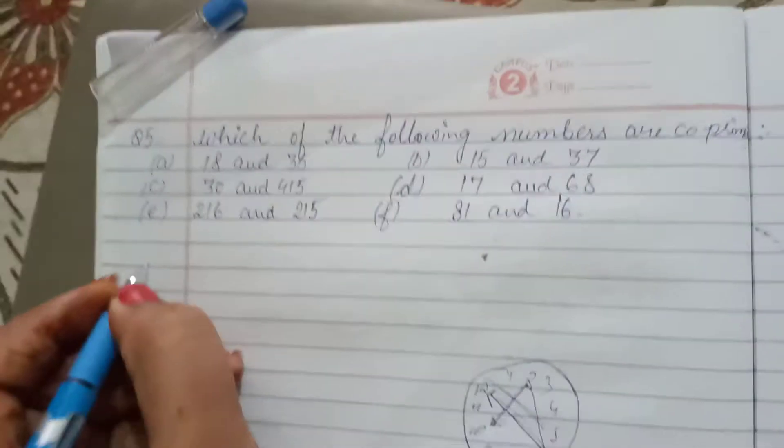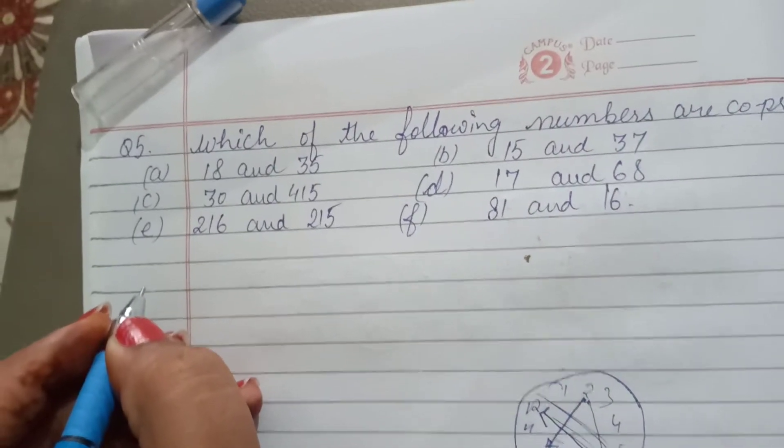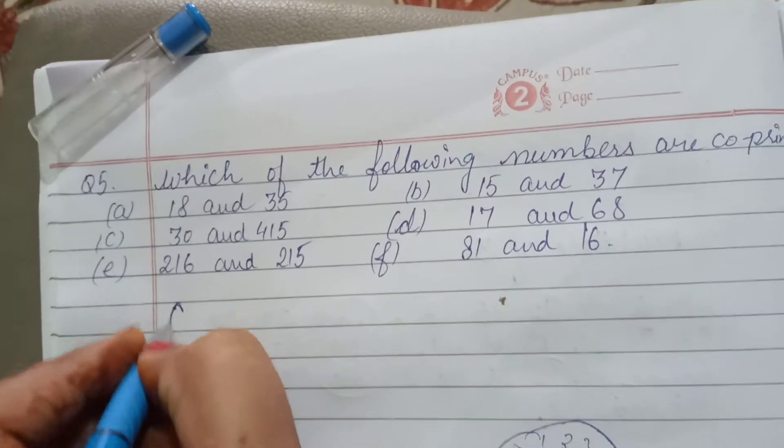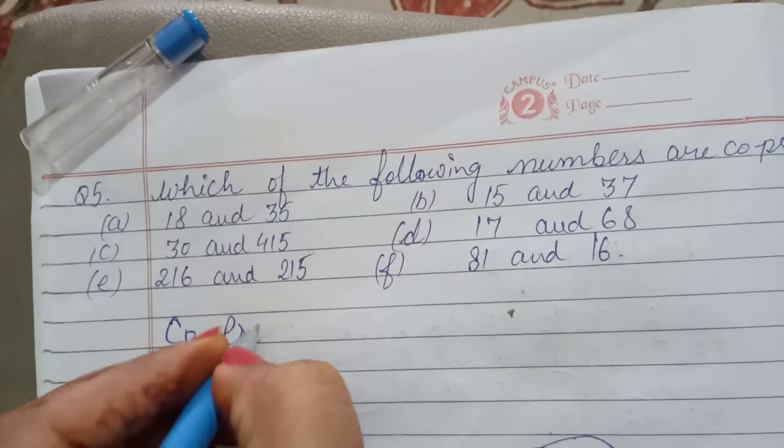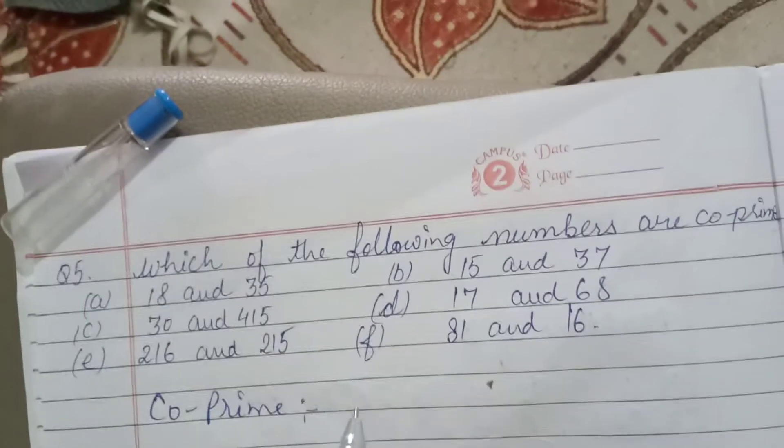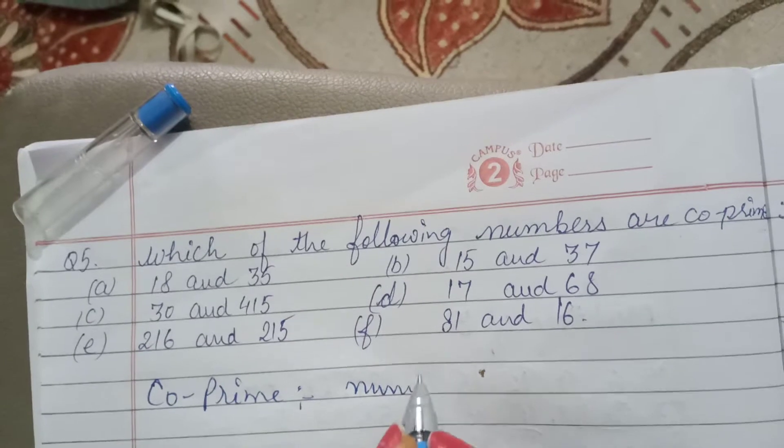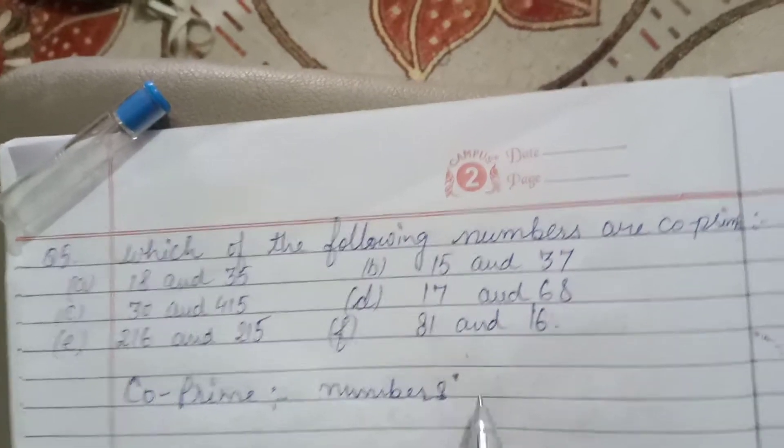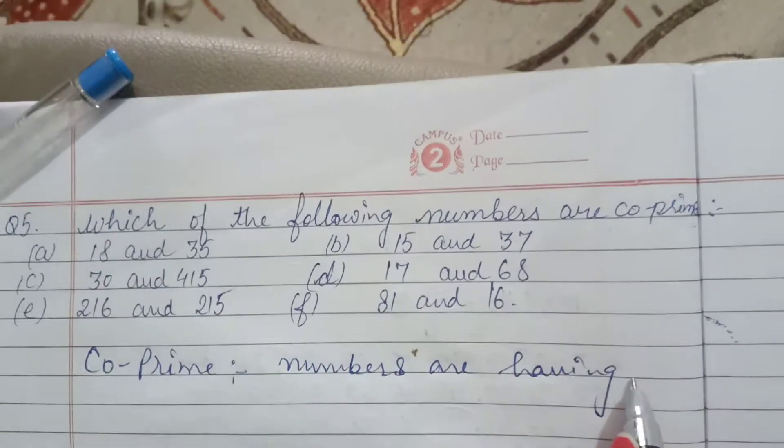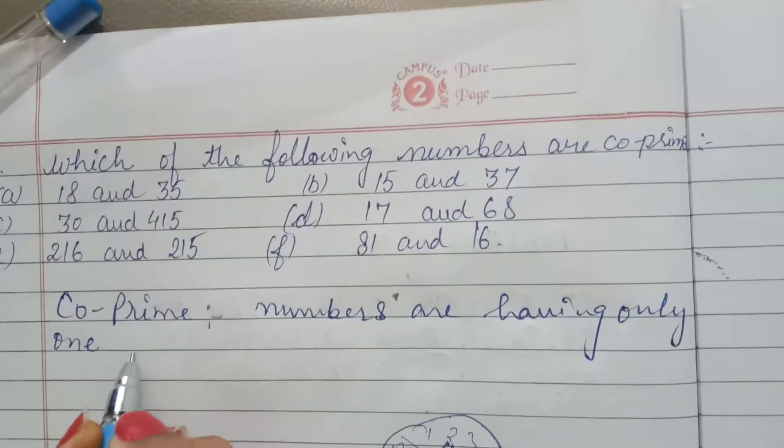First, we know that co-prime - co-prime numbers are having only one common factor.